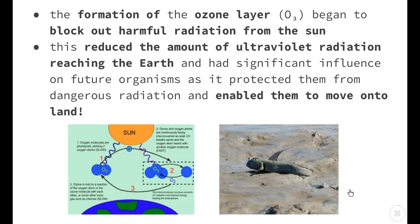The formation of the ozone layer, made up of O3, where oxygen atoms headed into the stratosphere, helped to block out harmful radiation from the sun. This reduced the amount of ultraviolet light reaching the Earth and had a significant influence on future organisms, protecting them from dangerous radiation and enabling them to move onto land. The ozone layer blocks harmful UV rays while still allowing enough radiant energy to reach the surface to provide warmth for life, and also helped to drop temperatures to more manageable levels.